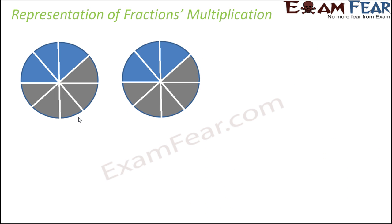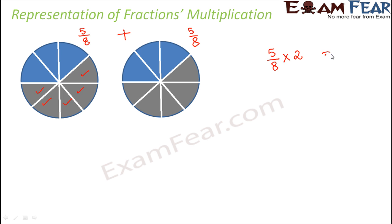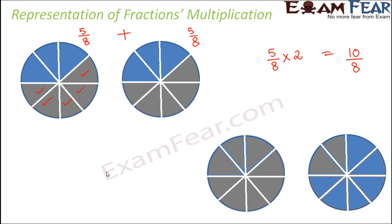Here we see two circles, and in each circle five out of eight parts are shaded. Adding these two circles means five eighths multiplied by two, giving a result of 10 over 8. Ten parts out of eight — since we started with two circles, the total of 10 shaded parts spans both circles.